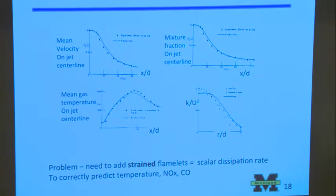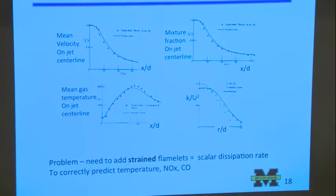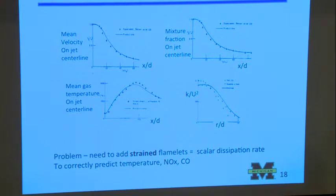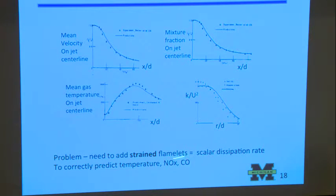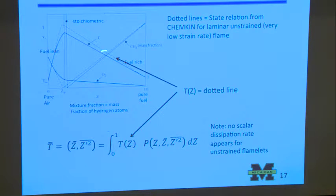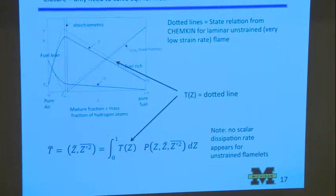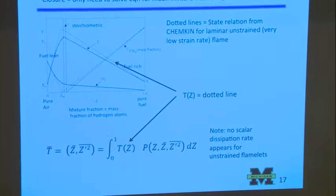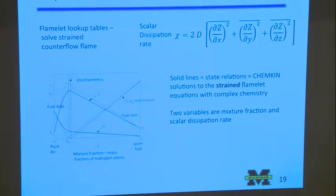This is what he gets - mean velocity drops on centerline, mixture fraction drops as things mix. The mean temperature goes up and down using a lookup table from mean mixture fraction to mean temperature. This would be the end of the story except he didn't use strained flamelets so this flame can never extinguish. They find carbon monoxide and other things are not right. Even temperature is too high.